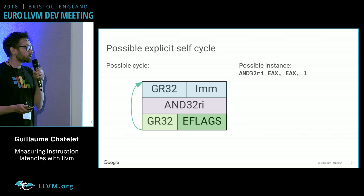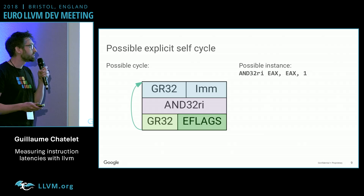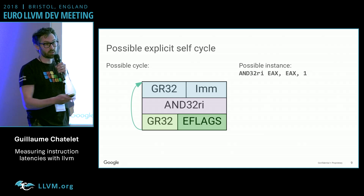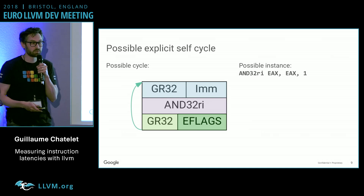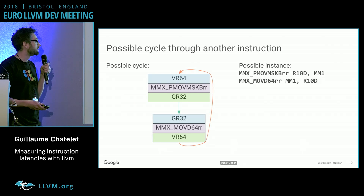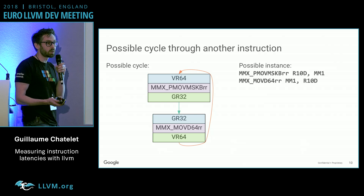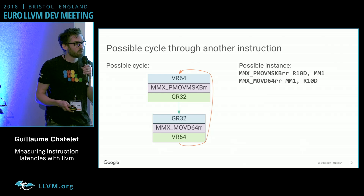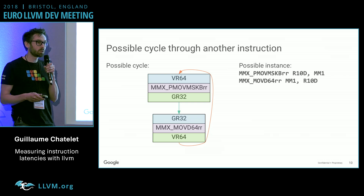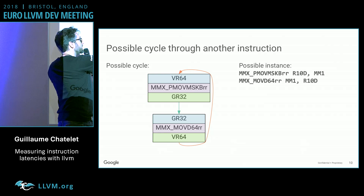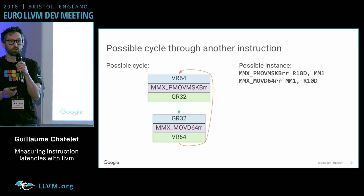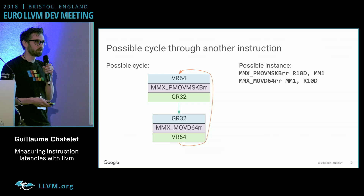For other kinds of instructions, you just have to pick an output that is the same as the input, and then you have a cycle and it's serial. Sometimes it's not feasible because the input and the output are not compatible. So we devised an algorithm to pick another instruction that will consume the same type as the output and will output the same type as the input of the other one. If you put those back to back, you're going to have sequential execution.